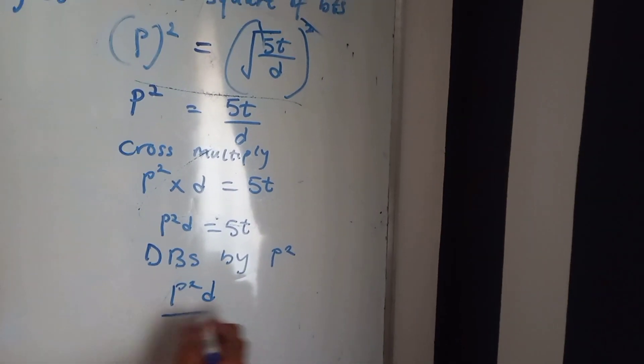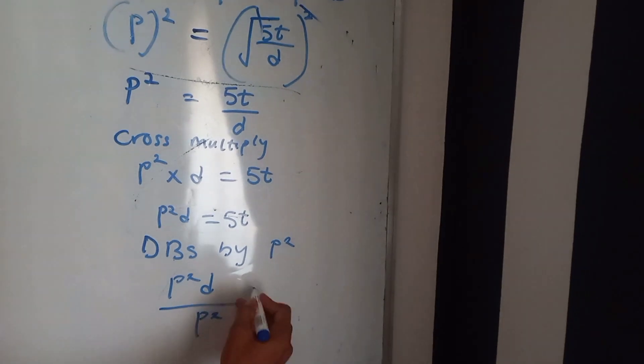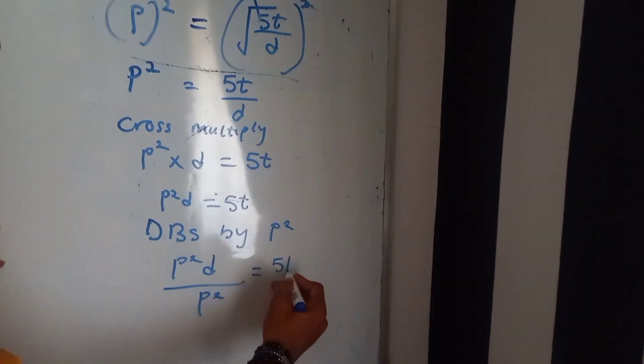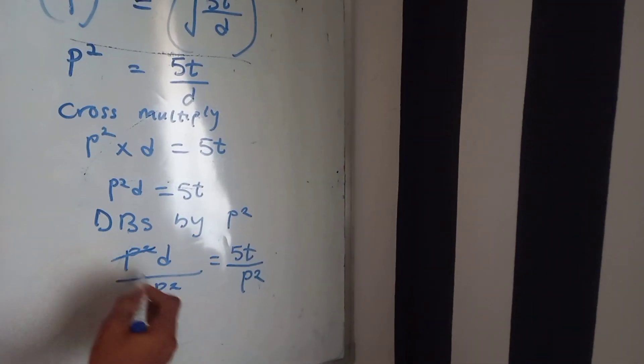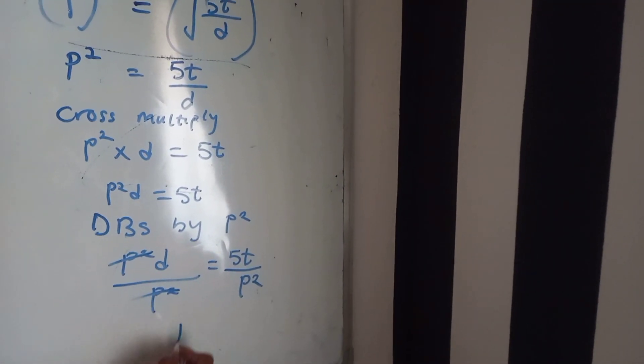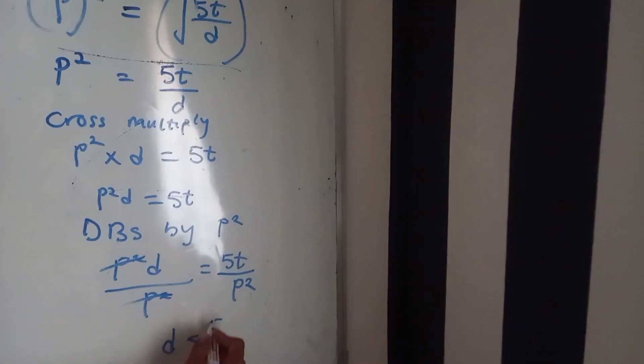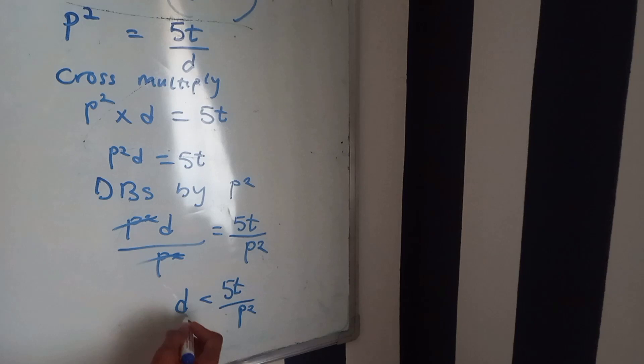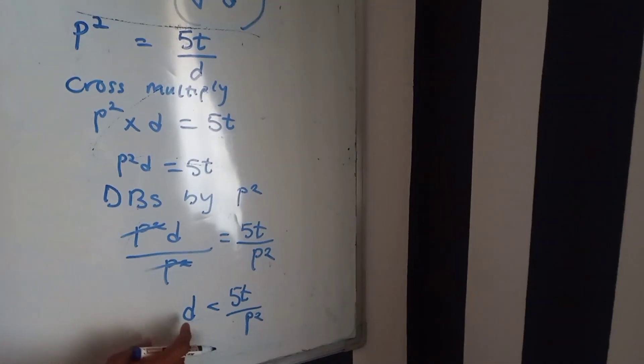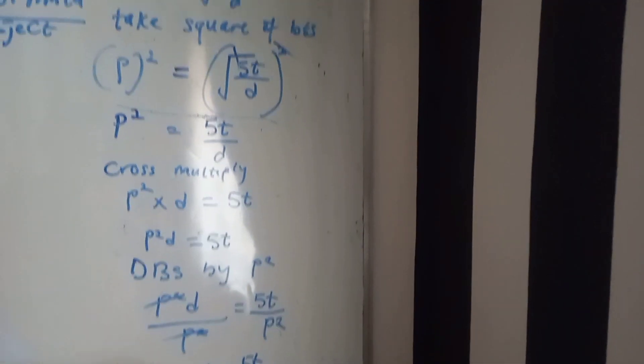P square d over P square equals 5c over P square. So P square cancel, P square is gone, we have d equals 5c over P square. So this is my final answer. It's very simple, do you see that? It's very simple.